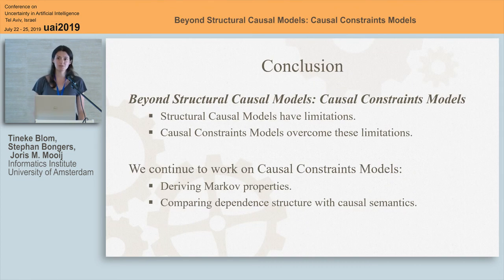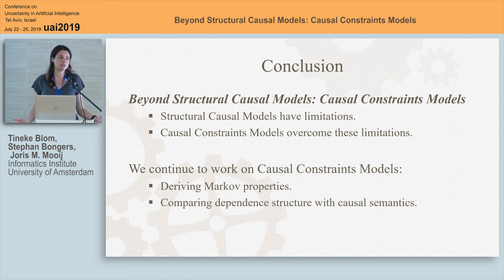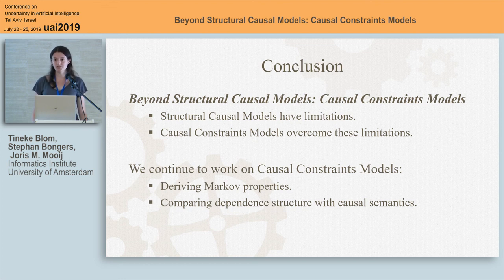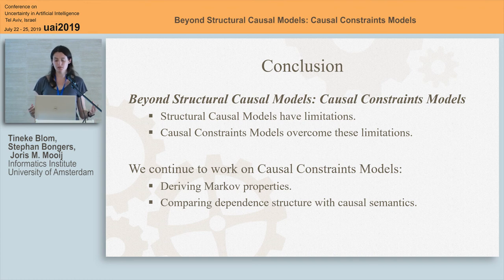To conclude, in our paper we went beyond structural causal models and introduced causal constraints models. We showed that SCMs have limitations and CCMs can be used to overcome these limitations. We continue to work on causal constraints models, looking at Markov properties for these types of models. I hope this will give us more insight into how the dependence structure and the causal structure of real-world systems are related. Thank you for your attention.